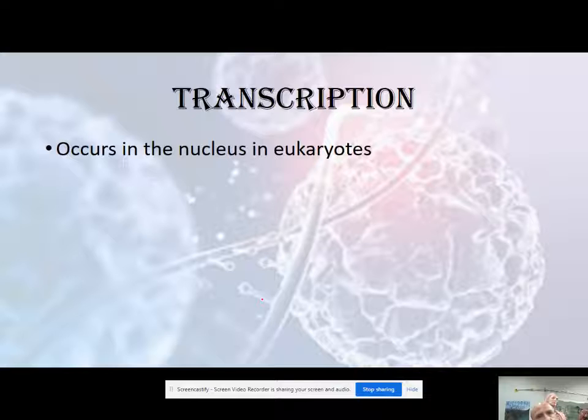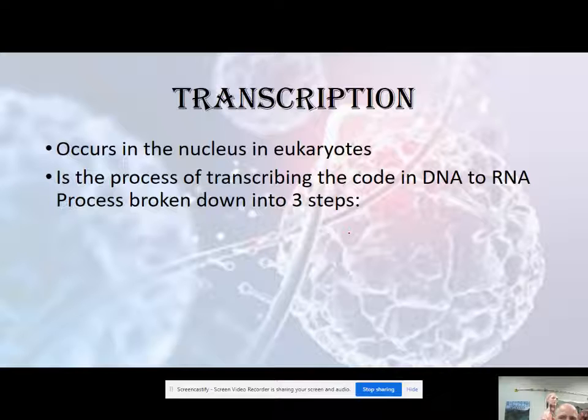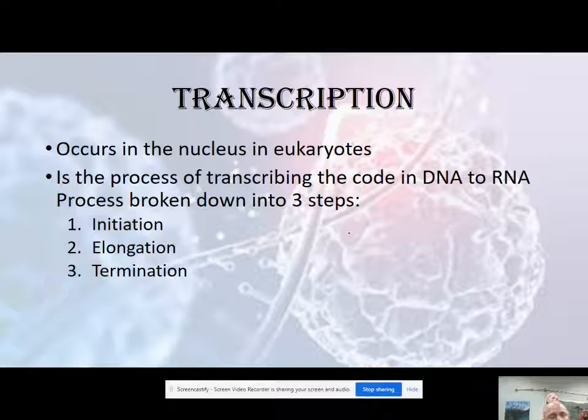Transcription occurs in the nucleus of eukaryotes. Remember, if it is in a bacteria there is no nucleus — it'll just occur in the cytoplasm. It's the process of transcribing the code in DNA into an RNA strand, and then that RNA strand can leave the nucleus and go to the ribosomes to be translated into a string of amino acids that eventually becomes a protein. We're going to break transcription into three steps: initiation, elongation, and termination.